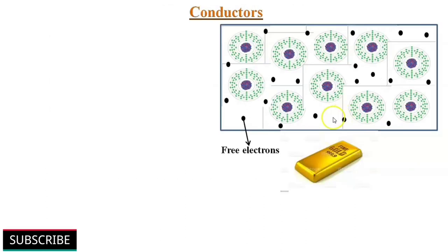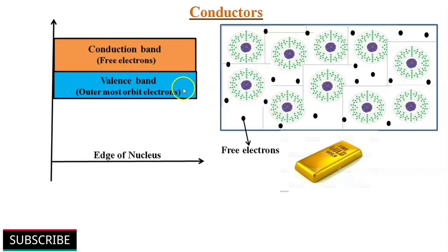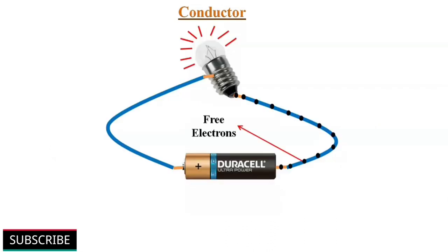It is because there are a large number of free electrons available in a conductor, for example like gold, which easily allows the flow of electric current through them. In terms of energy band, the valence and conduction bands overlap each other. Thus at normal temperature, valence electrons can become free electrons to flow electric current. Because electrons are negatively charged, the movement of electrons in conductor is from the negative terminal of the battery to the positive terminal.